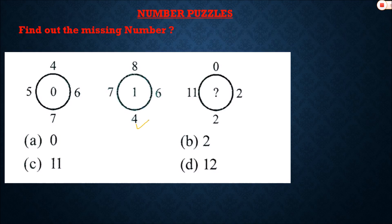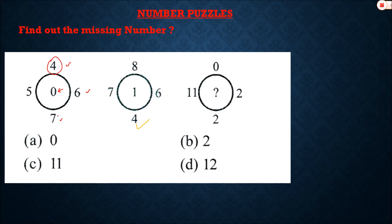Question number two is a different kind of question, but the concept is simple. Whenever you get a circle, the outside numbers are operated to give the inside value. Here, we add the front values — 7 plus 4 equals 11 — then subtract the opposite values: 5 plus 6 equals 11, and 11 minus 11 equals 0. So 0 is the middle value.